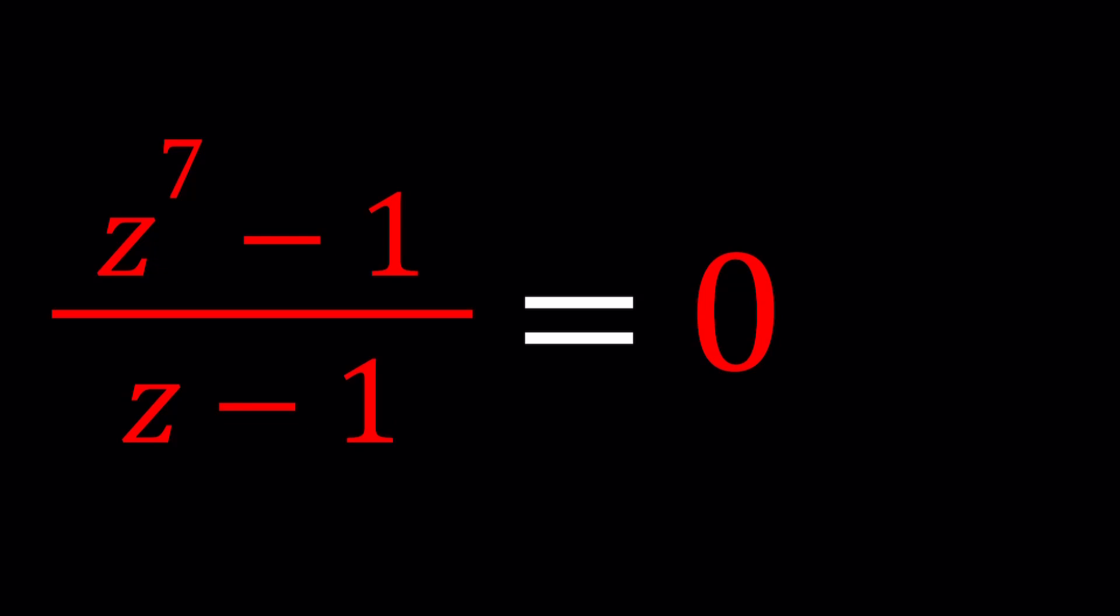Z to the power 7 minus 1 divided by Z minus 1 equals 0. This may look like a heptic-septic equation which is 7th degree, but we're dividing Z to the 7th by Z, so it's going to end up being hexic. It's going to be a little hectic, so forgive me for that, and I'll be presenting two methods.